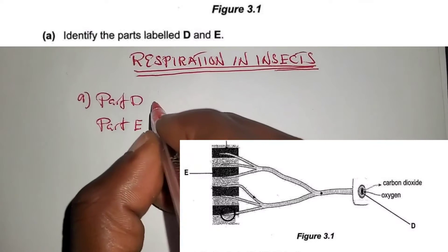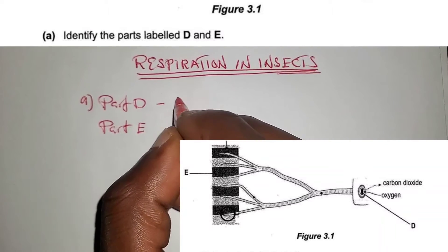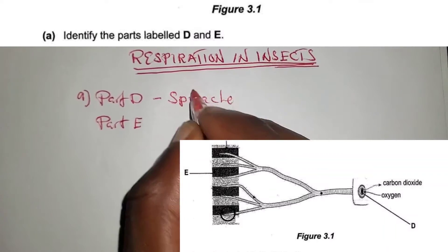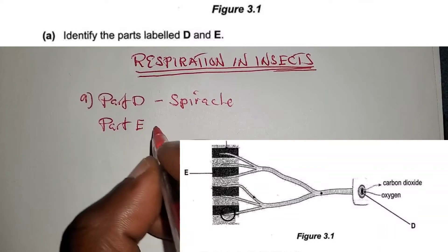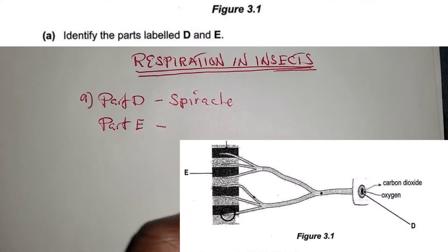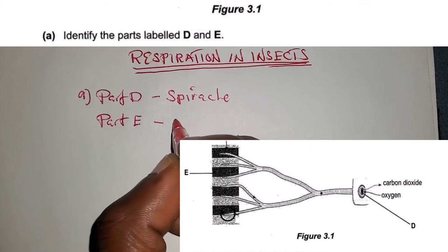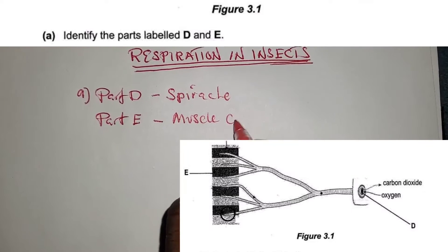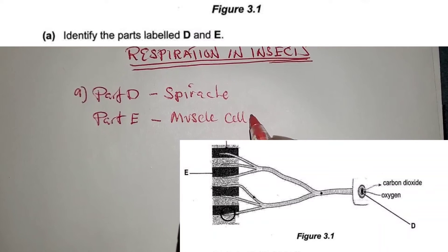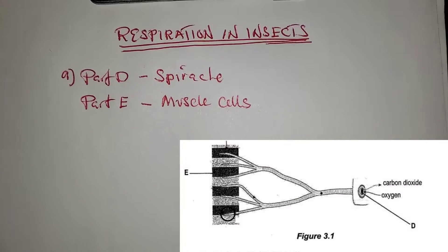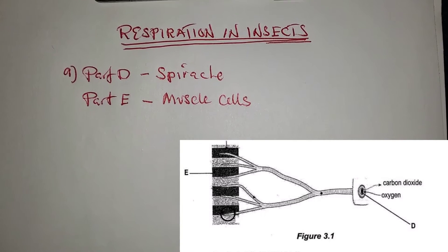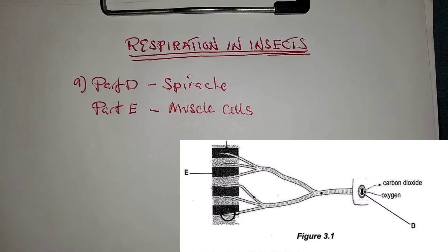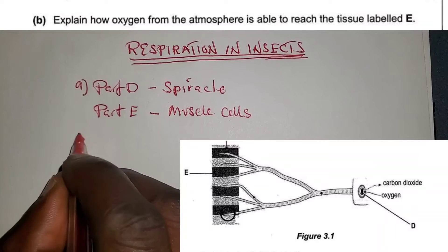Part D is the spiracle — a spiral core — and part E is the muscle cells. So D is the spiracle and E is the muscle cells.